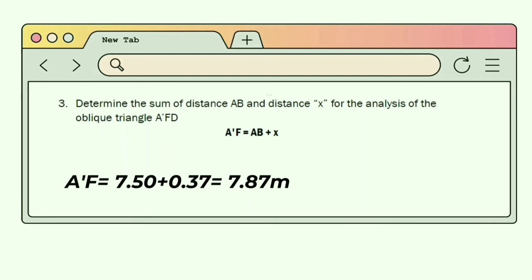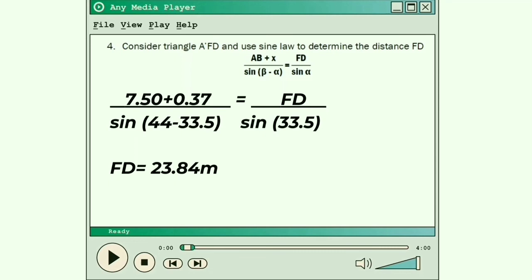Third, determine the sum of distance AB and distance X for the analysis of the oblique triangle AFT. The formula is: AF equals AB plus X. 7.50 plus 0.37 equals 7.87.